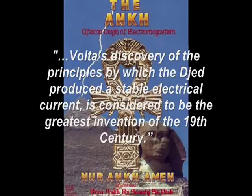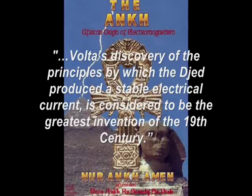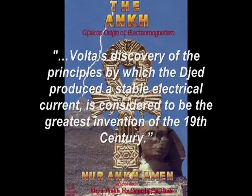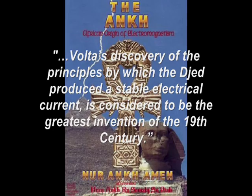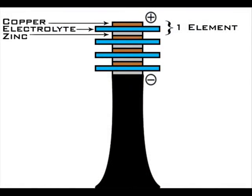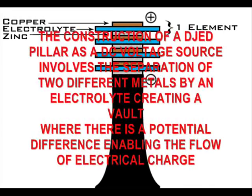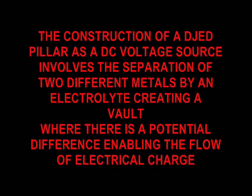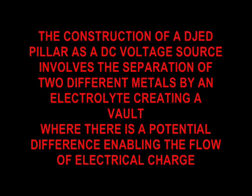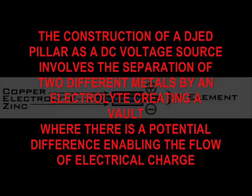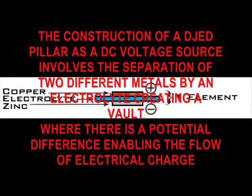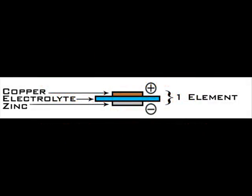Volta's discovery of the principles by which he then produced a stable electrical current is considered to be the greatest invention of the 19th century. The construction of a Z-Pillar as a power battery, or DC voltage source, involves the separation of two different metals by an electrolyte, creating a volt or gap where there is a potential difference enabling the flow of electrical charge.